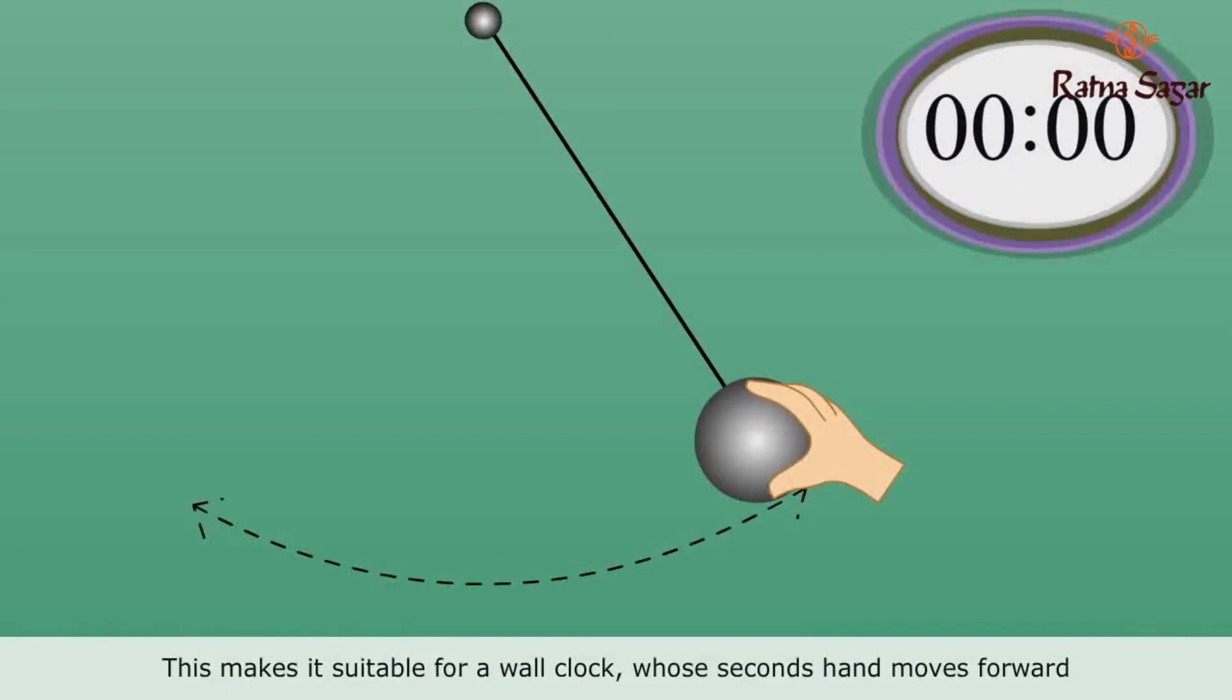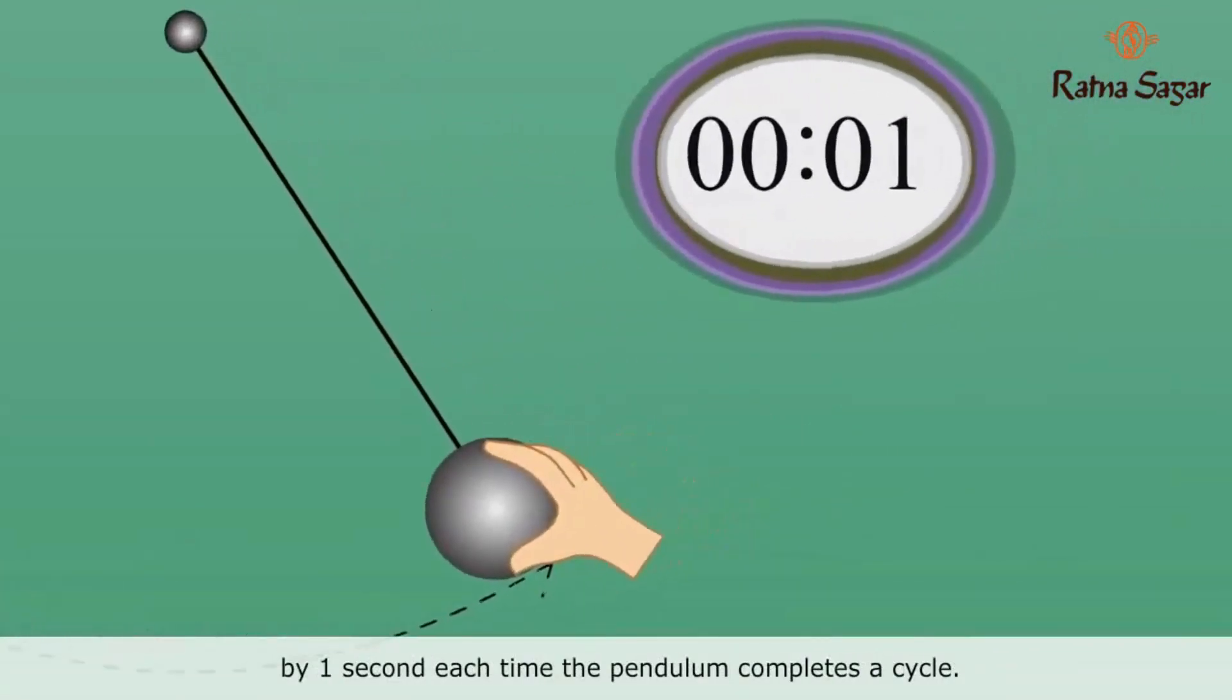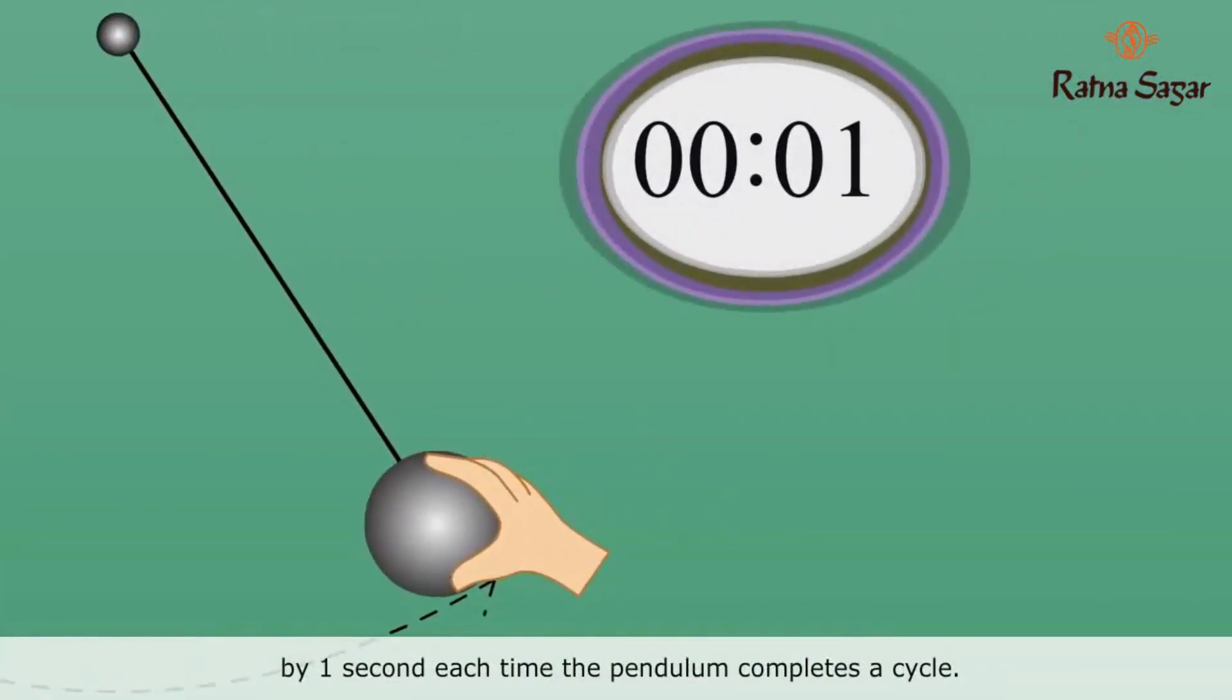This makes it suitable for a wall clock whose seconds hand moves forward by one second, each time the pendulum completes a cycle.